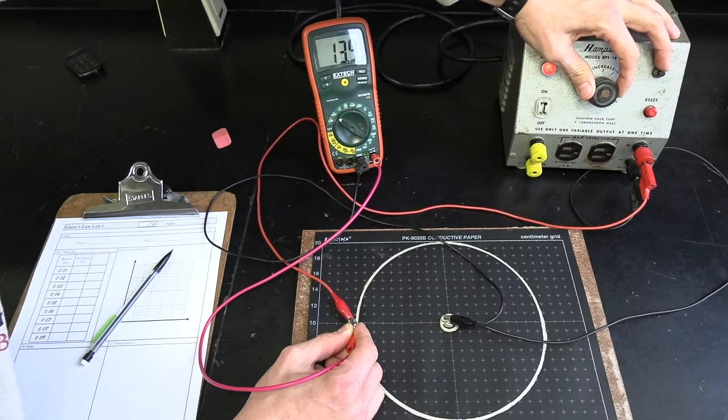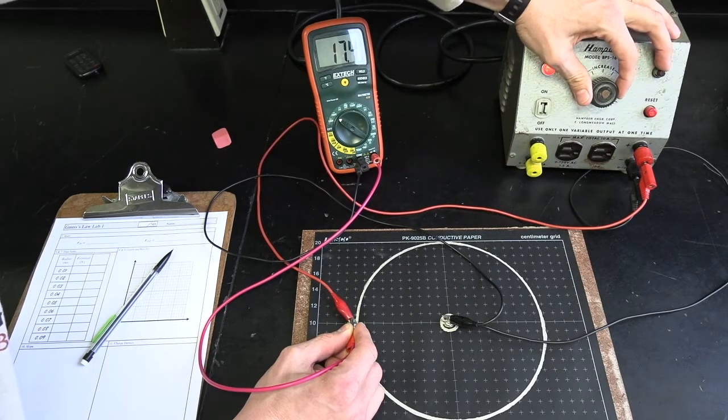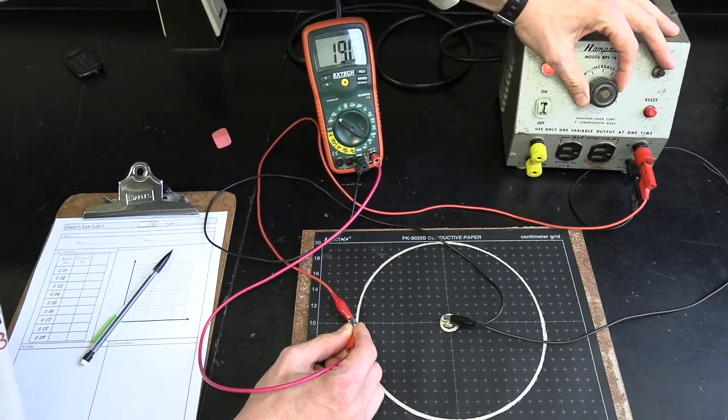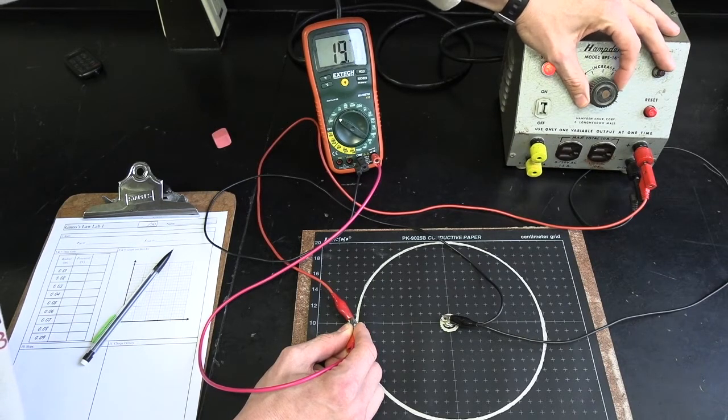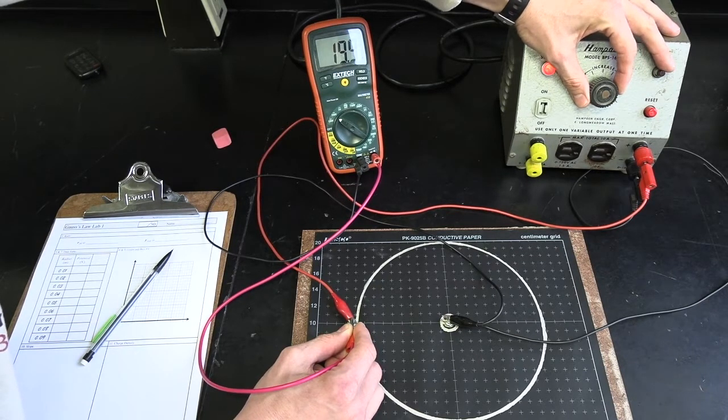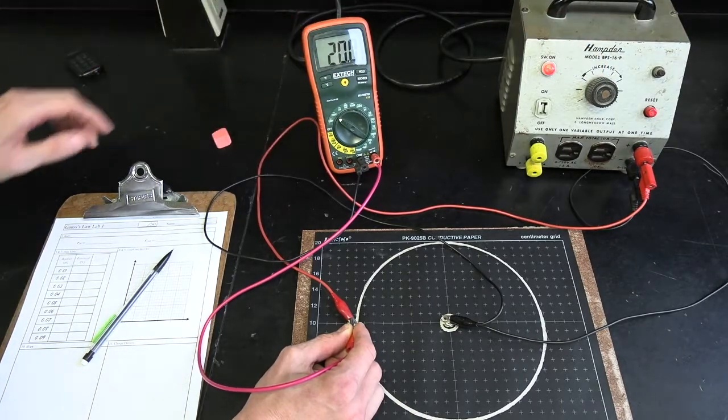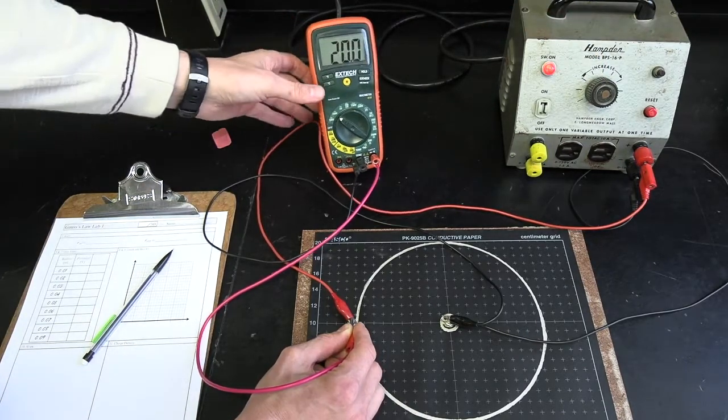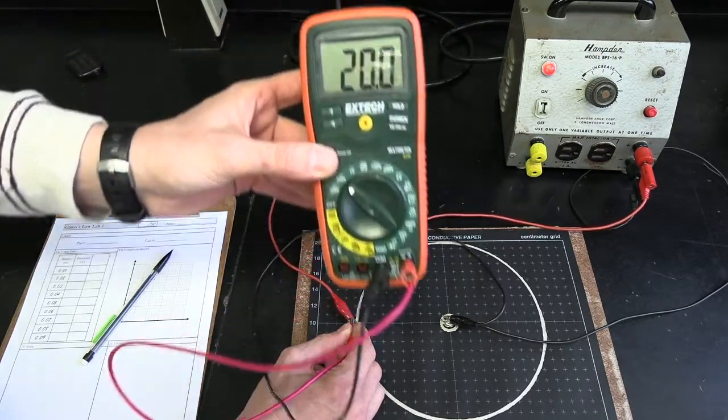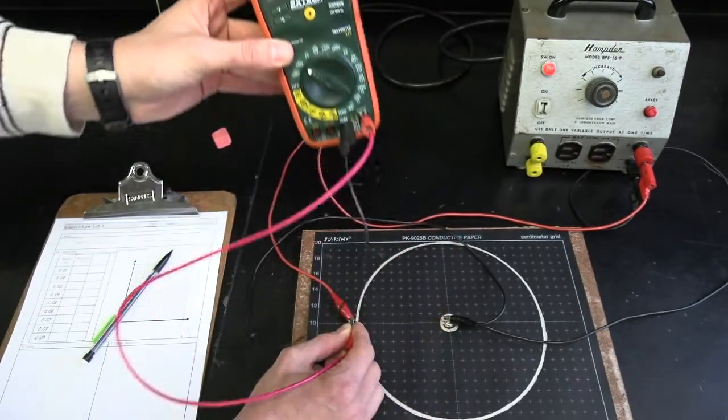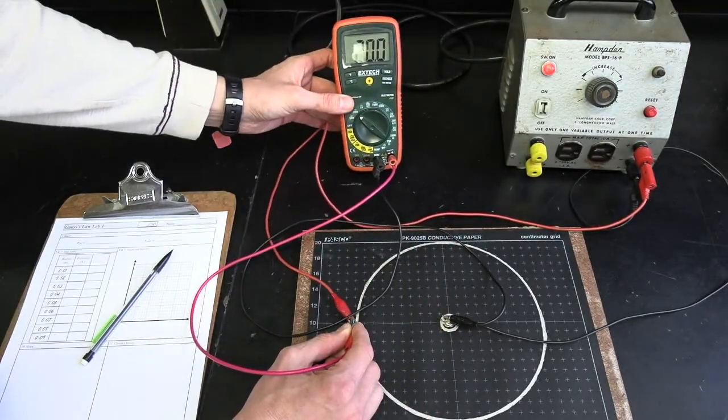So we're measuring not V, which is the voltage from infinity. We're measuring delta V from one conductor to another along this path. So I'm going to turn, as the instructions say, up to 20 volts. Now, when I assign you all data, I might give everyone different voltages. I haven't decided yet how I'm going to change these. So you may have a different voltage than 20. But as you could see right now, this volt meter is registering 20 volts between the conductors, which is what I want.